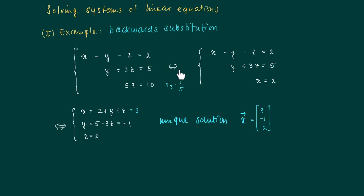So we have a unique solution: x equals 3, y equals minus 2. Observe that we needed equivalent systems here. In the first step, we can go from the simplified system back to the original by multiplying the third equation by the constant 5 to get 5z equals 10 back.